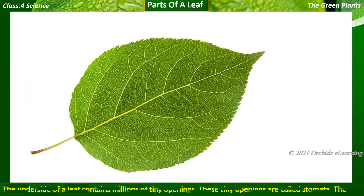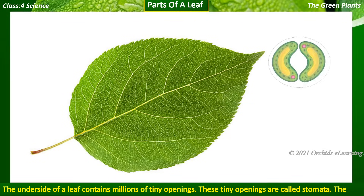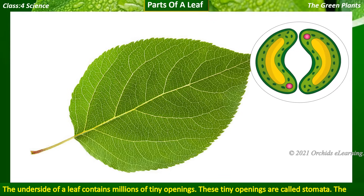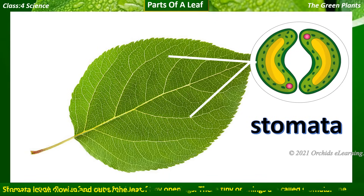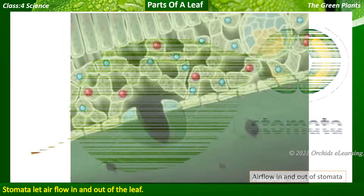The underside of a leaf contains millions of tiny openings. These tiny openings are called stomata. The stomata let air flow in and out of the leaf.